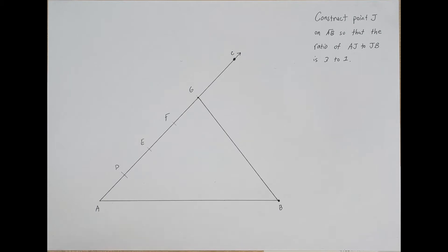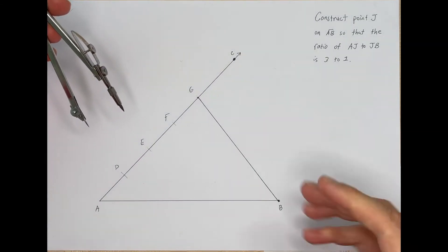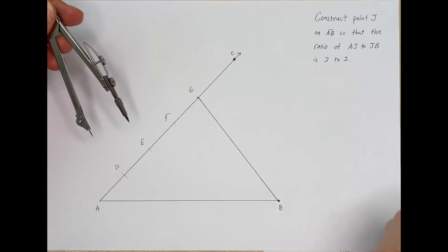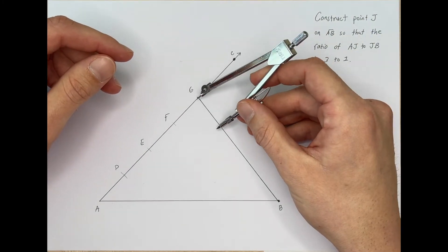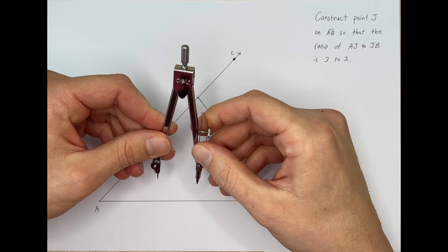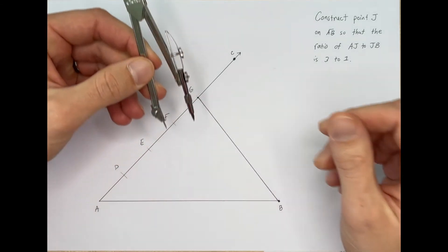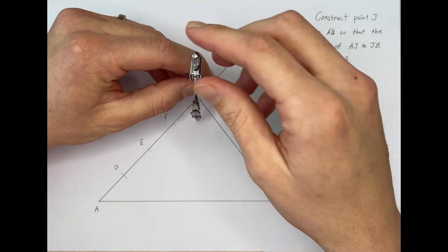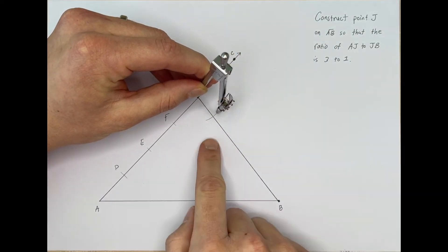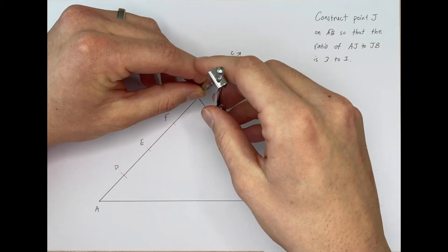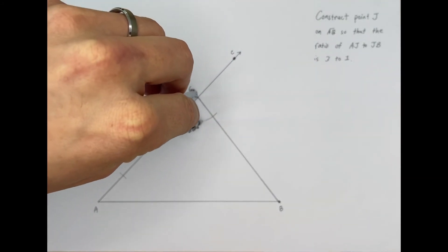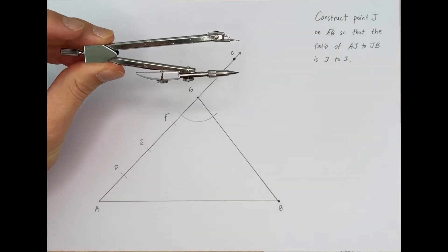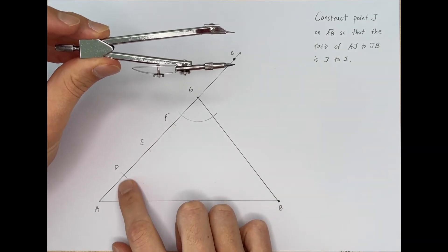Now we're going to take our compass again and copy this angle. I've done a previous construction video on how to copy an angle — I'll post the link in the cards at the top right hand corner. We're going to put the needle on G, close the compass down just a little bit, and draw an arc that intersects the segment we just created and also our ray AC over here on the left. That's step one. We're going to copy this angle to the three sections — at points F, E, and D.